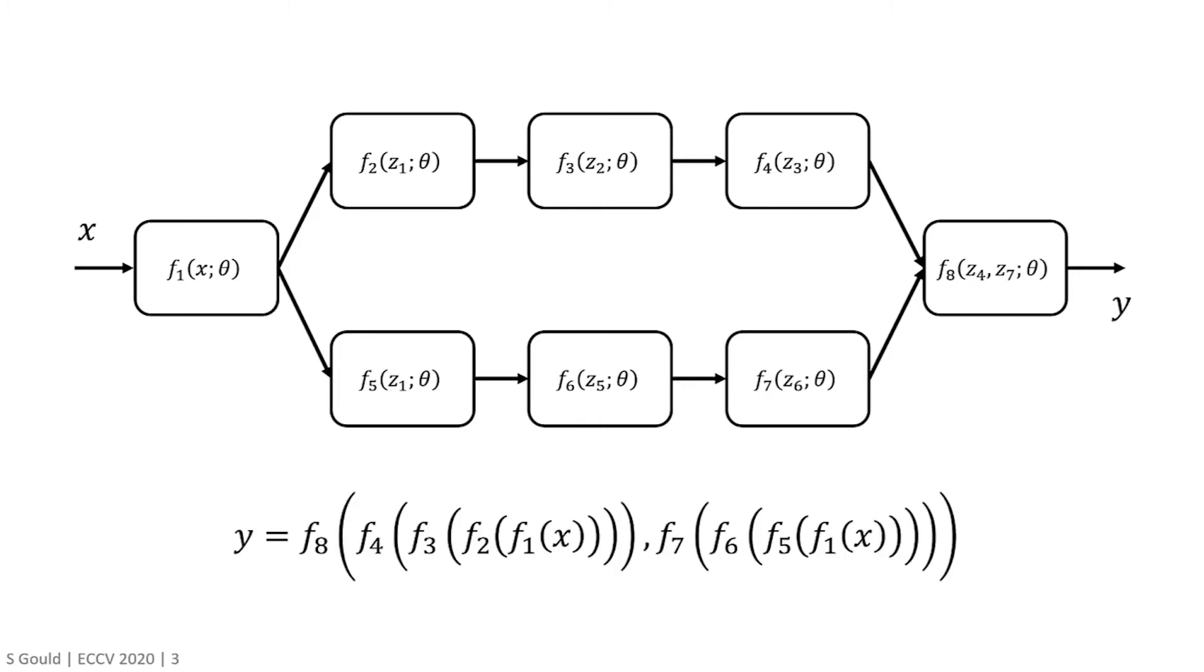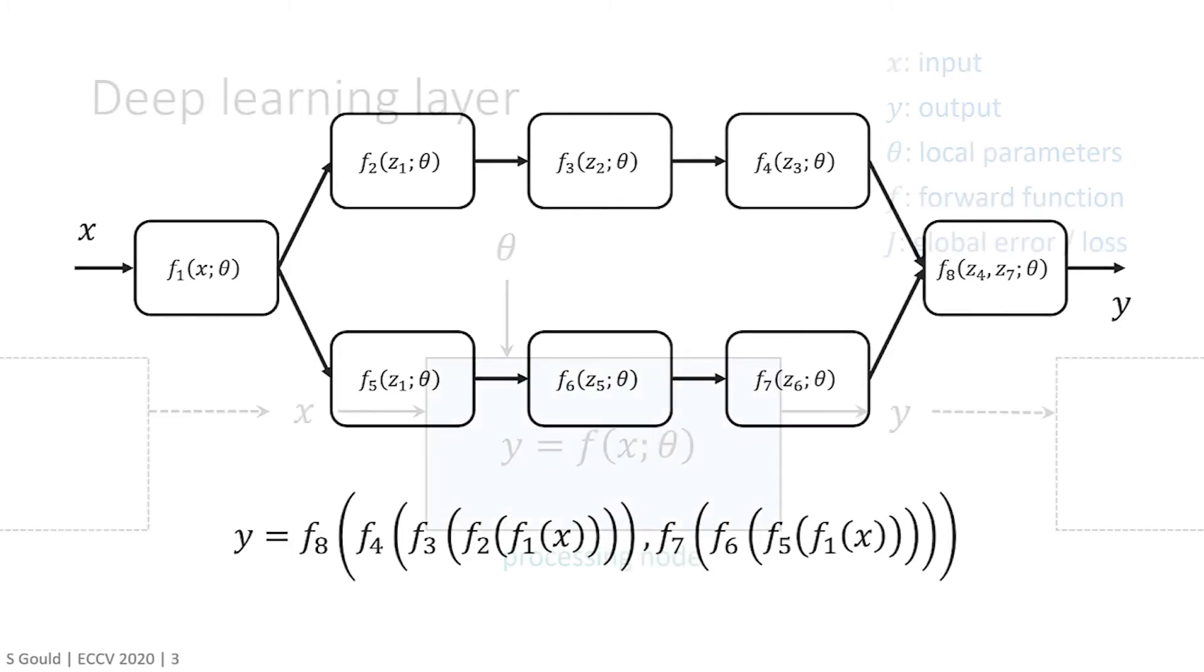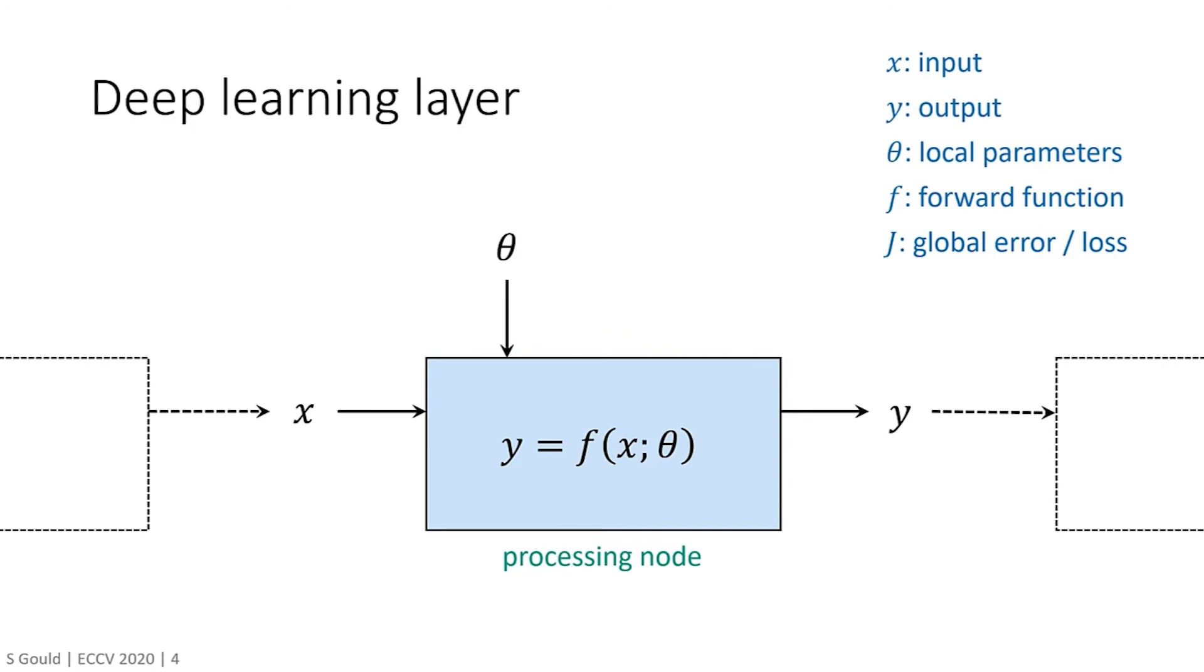In turn, this defines the output of the network as a composition of functions, each function taking its input from the parent node in the graph. The graph structure also defines how error signals or gradients are propagated in the backward pass for updating model parameters. Each processing node, sometimes called a layer in a data flow graph, is then responsible for two primary operations.